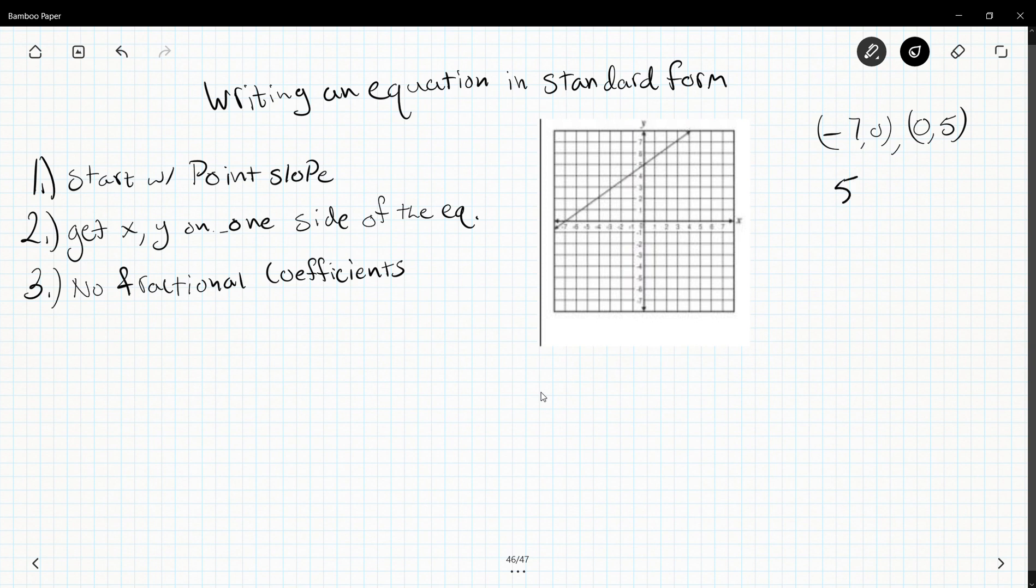So 5 minus 0 over 0 minus negative 7, which is plus 7. So our slope is 5/7.